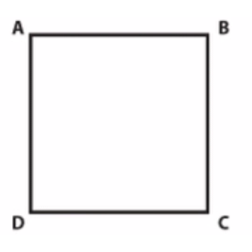In a square, all sides are equal. In this case, the sides AB, BC, CD, and DA are all equal.